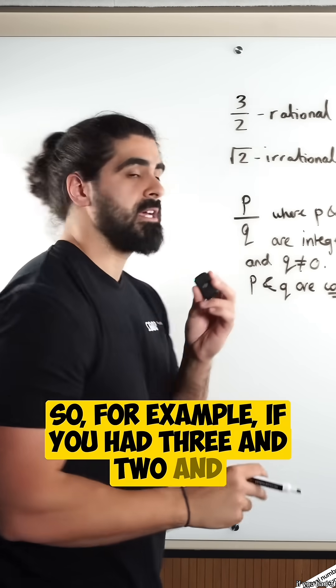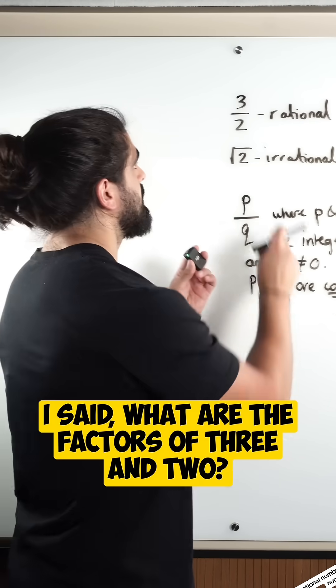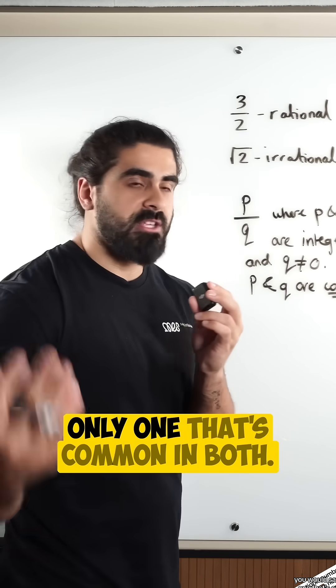So, for example, if you had 3 and 2, and I said, what are the factors of 3 and 2? You would say 1 is the only one that's common in both.